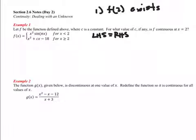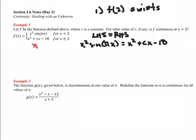So let's go ahead and set those two sides equal. x squared sine of pi x equal to x squared plus cx minus 18. Okay, and that's all going to be true at one point. We want them equal at x equals 2. So we're going to plug in a 2. So that would be 4 sine of 2 pi equal to 4 plus 2c minus 18.